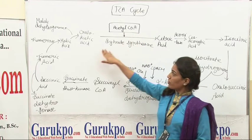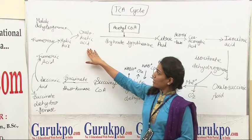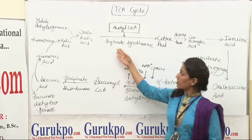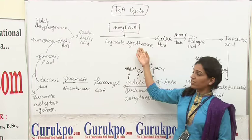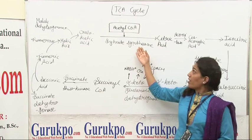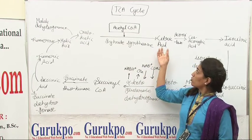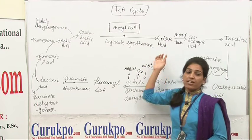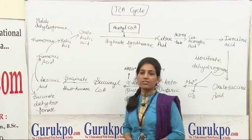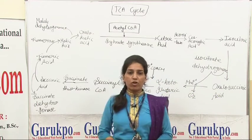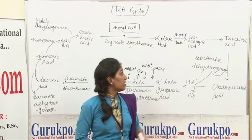This acetyl coenzyme A reacts with oxaloacetic acid in the presence of citrate synthetase enzyme and converts into citric acid. Citric acid is the first product of Krebs cycle.